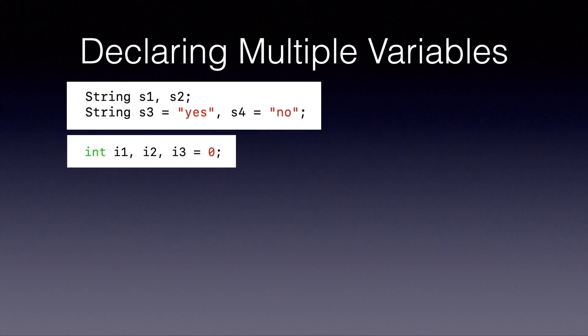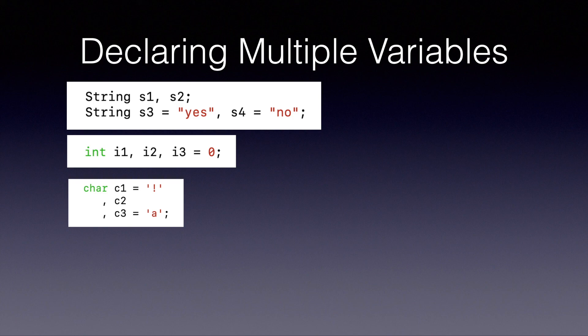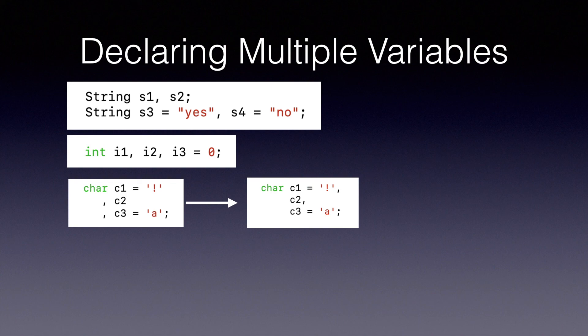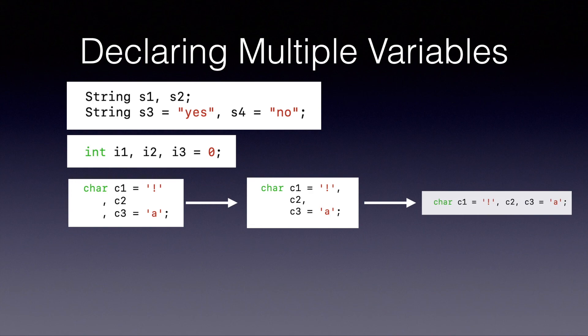Now let's look at a trickier declaration and initialization. What do you think — is it a valid declaration? Yes, it is. In Java, it ignores the newline character, which is inserted when we hit enter, and it also ignores white spaces. So in your mind, you can translate this statement by moving the commas right after the variable names and removing the newline characters. This statement is effectively the same as int i1, i2, i3 — just that i1 and i3 are both initialized, while i2 is not.